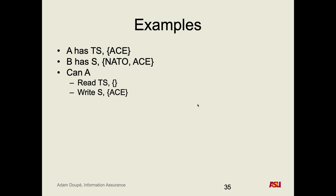What about writing — can A write to something that is secret with the category {ace}? No, why not? Because we can write up and this is writing down — top secret writing to a secret document. What about reading top secret {NATO, ace}? No, why not? Because {NATO, ace} is not a subset of {ace}. Think about the intuition: by reading this document A gets access to NATO information, which is a category they're not cleared for.